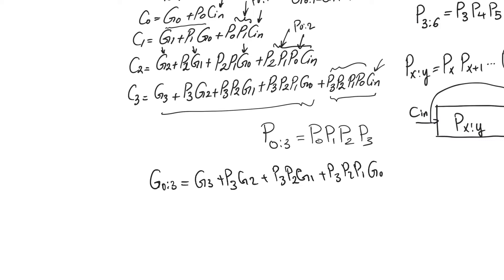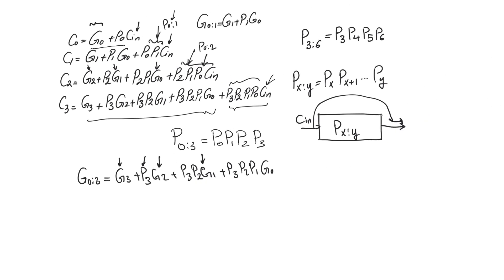What does G(0 to 3) mean? It means that within the range of bits from 0 to 3, at least one bit position is generating a carry-out, and that carry-out has enough propagates active so that it can appear at the output. For example, g3 doesn't need any additional propagates because it is already at the end of the range, but if it is g2 then p3 must also equal one so it can propagate to the output. G(x to y) means there is a bit within range x to y generating a carry-out with enough propagates to allow it to reach the output.